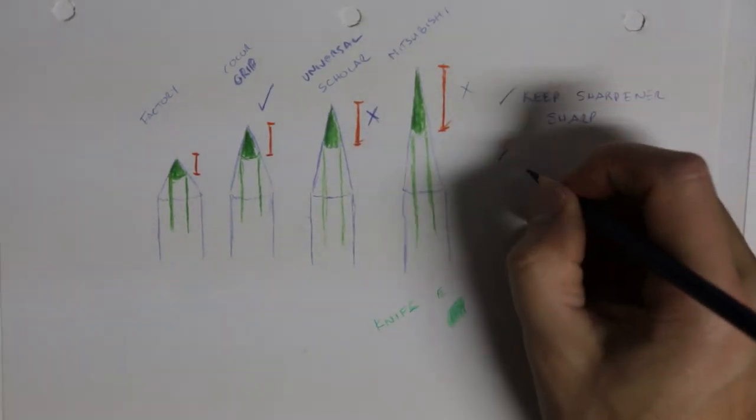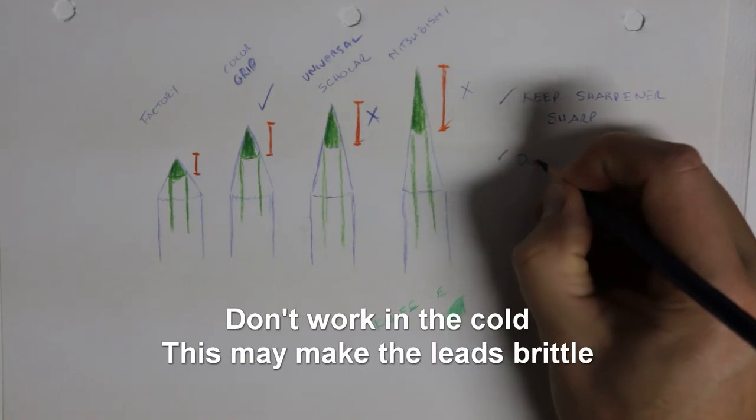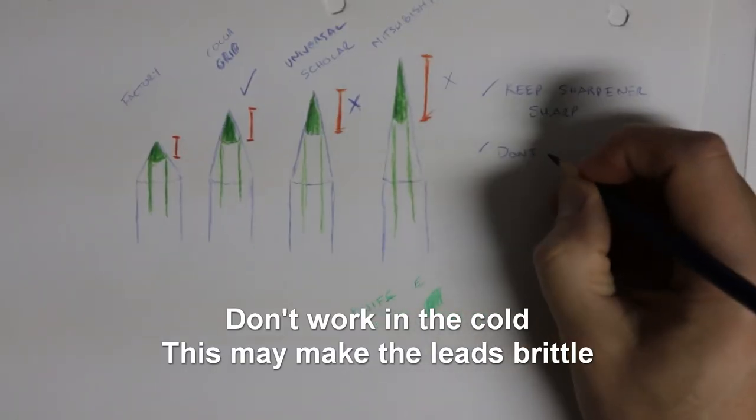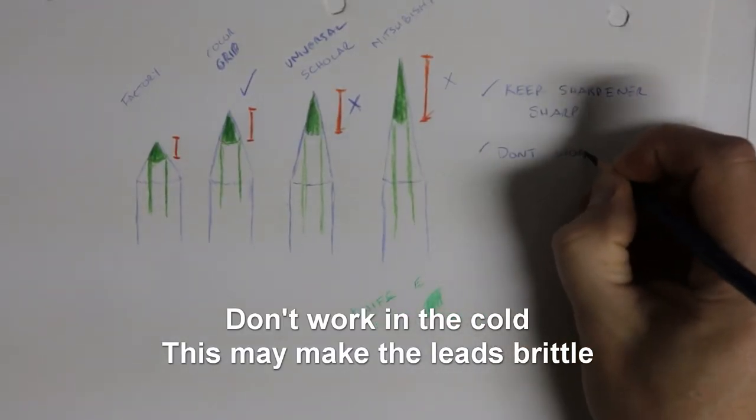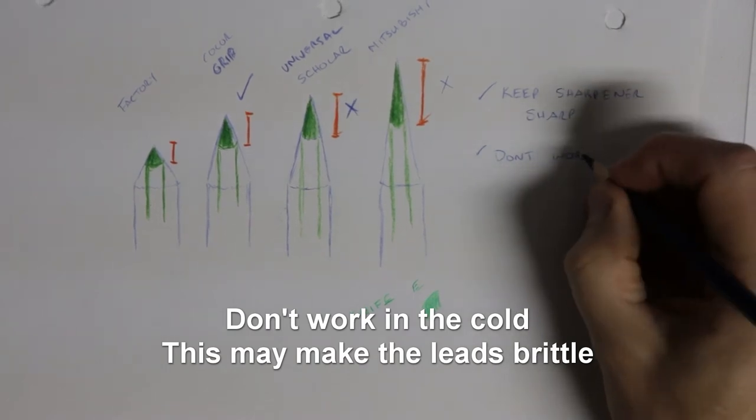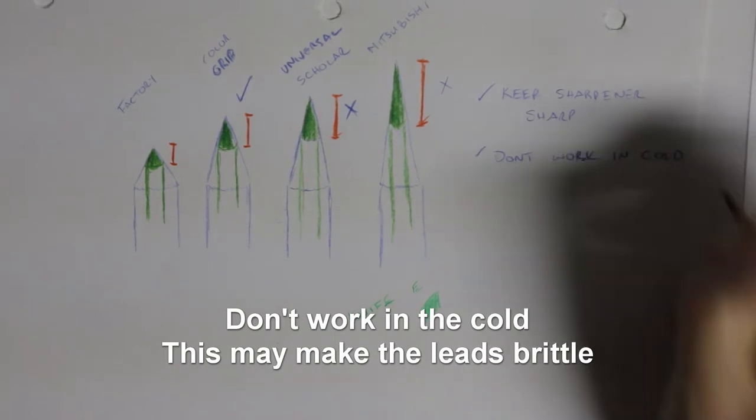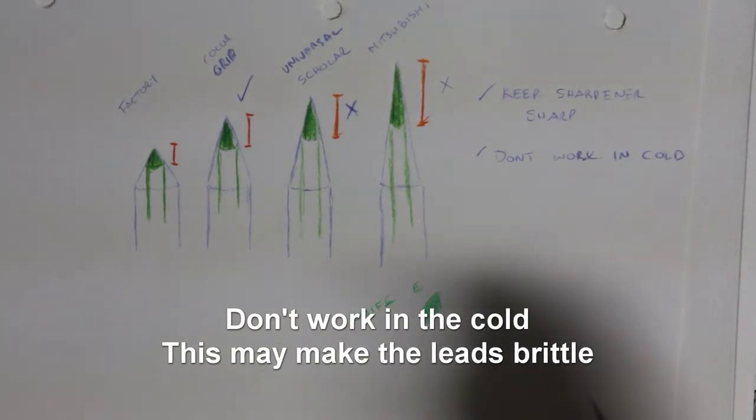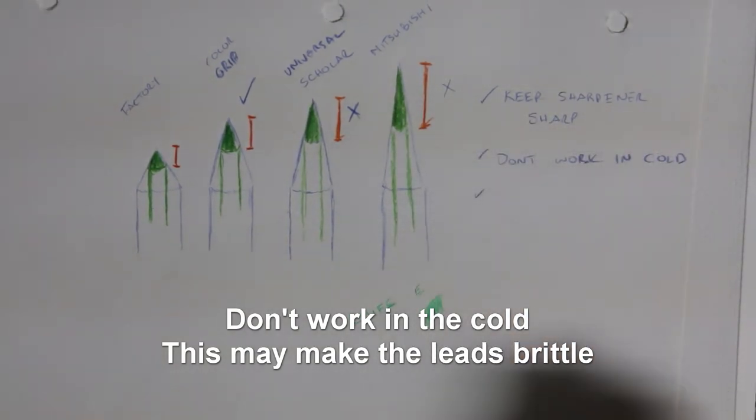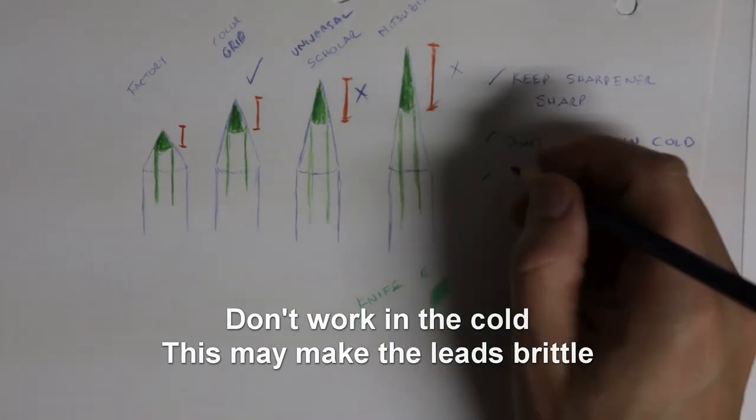These are wax pencils and one way of repairing them is to heat them up in the oven or the microwave. Again I don't recommend doing this. But it only makes sense that they could become brittle if you use them in cold conditions. When you're working with them try to work with them in a warm room.